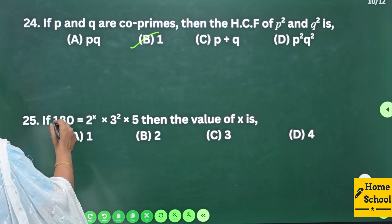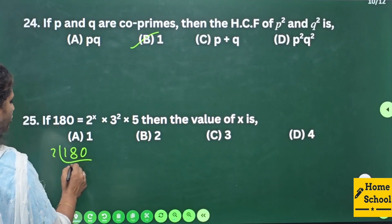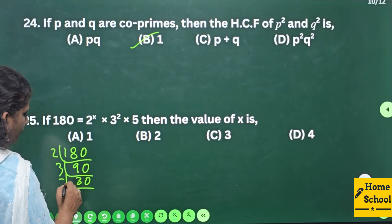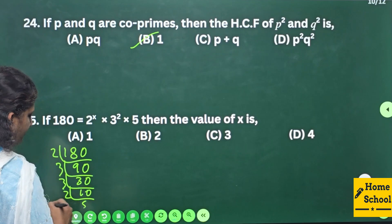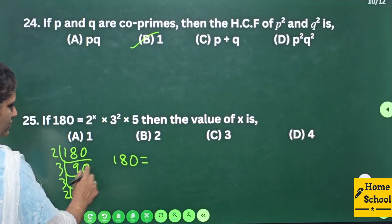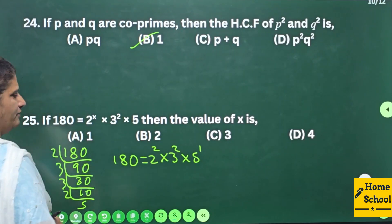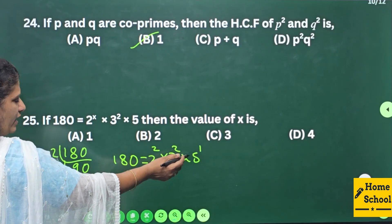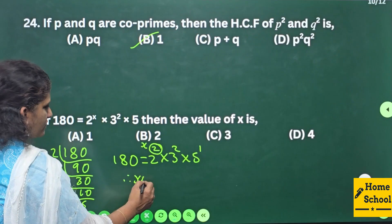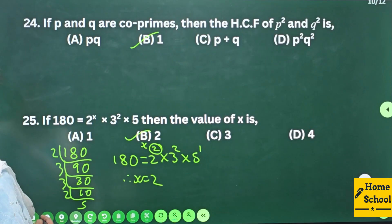Question 25: If 180 = 2^x × 3² × 5, then find the value of x. Writing 180 in prime factors: 2×90, 2×45, 3×15, 3×5. So 180 = 2² × 3² × 5¹. Comparing with 2^x × 3² × 5, we get x = 2. Option B is your answer.